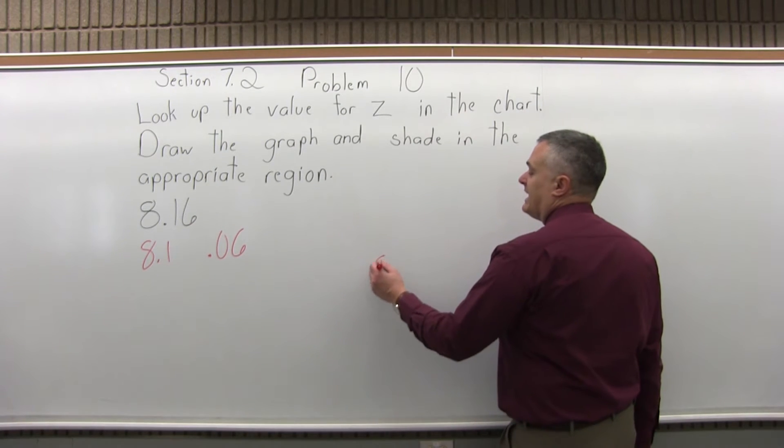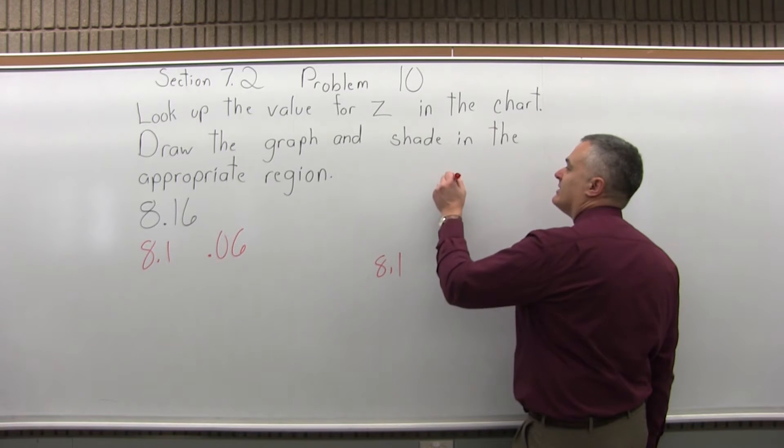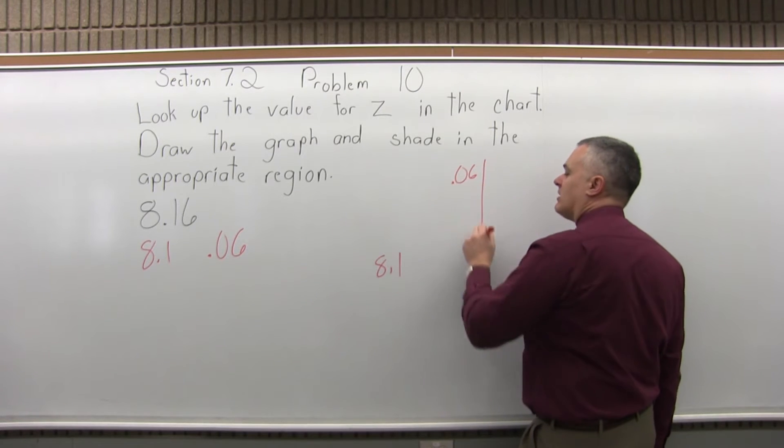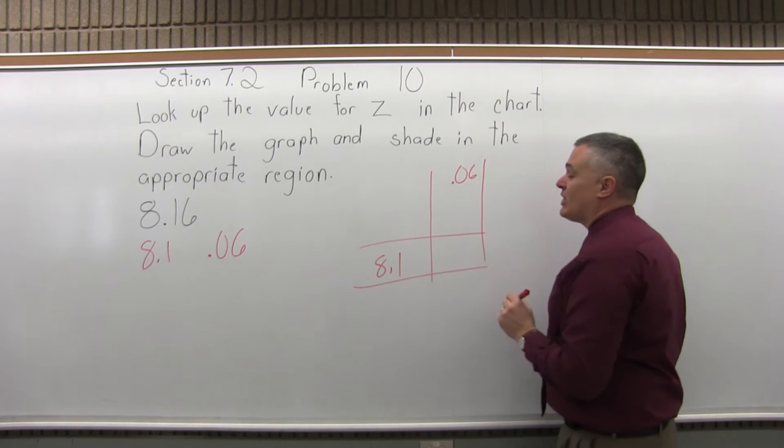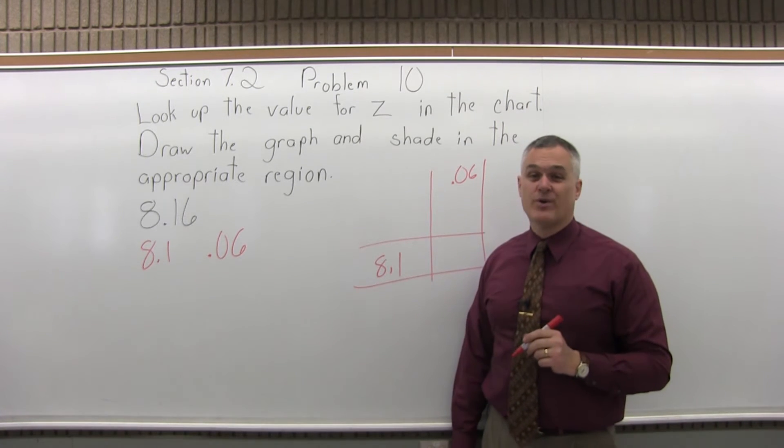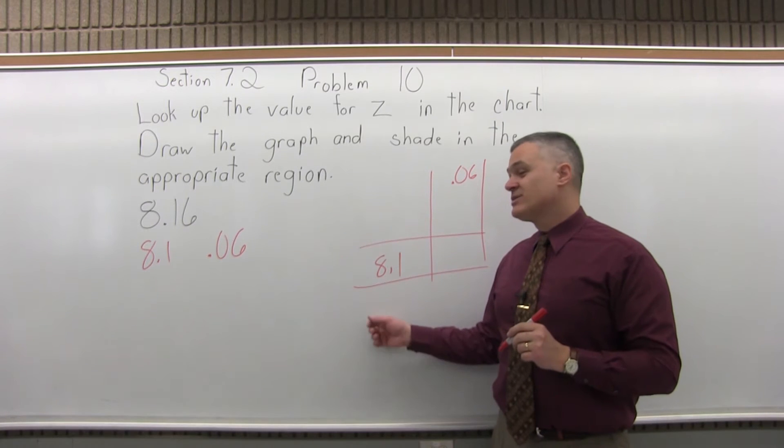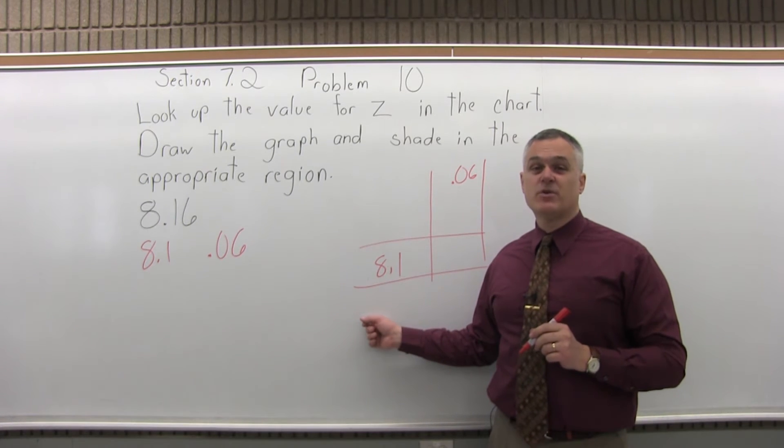We want to look for the 8.1 row and the 06 column. And I have a 06 column, but there is no 8.1 row. We have a little bit of a problem with this. The last row on the positive page of the chart is 3.4.